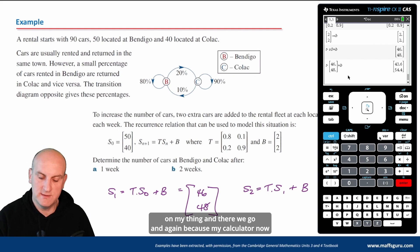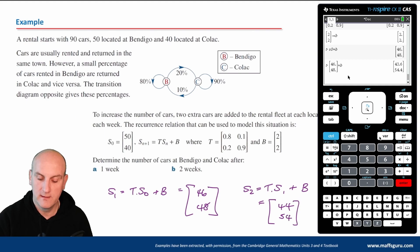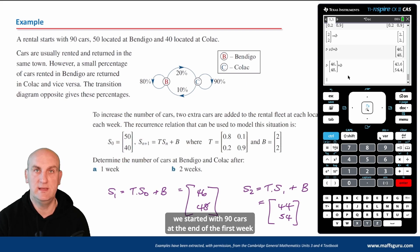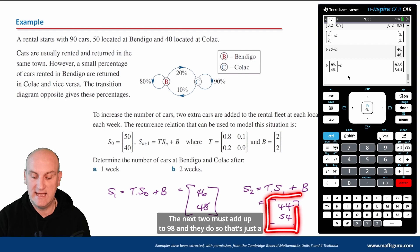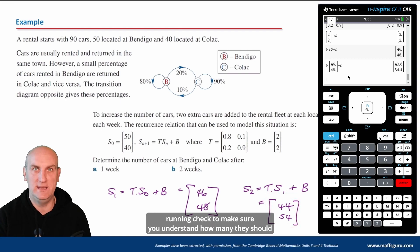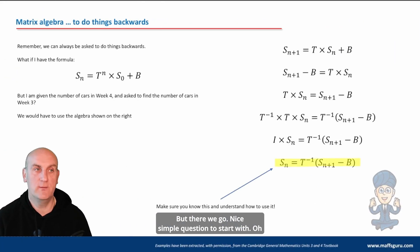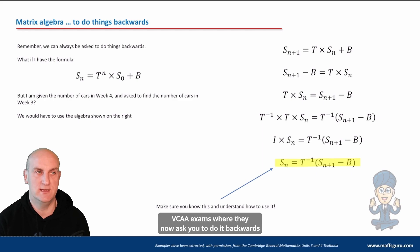Because the calculator gives decimal values, we interpret them as whole numbers: 44 and 54. As a running check — we started with 90 cars, added 4 per week (2 to each location), so after week 1 the total should be 94, and it is. After week 2 it should be 98, and it is. That's a useful check to make sure you haven't made a mistake. Nice simple question to start with.